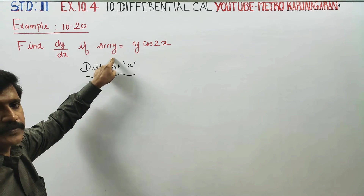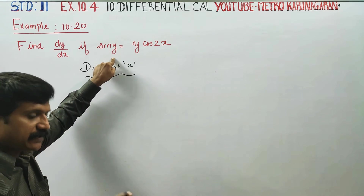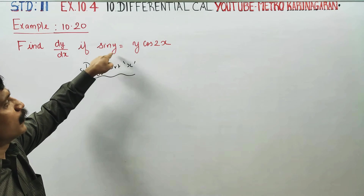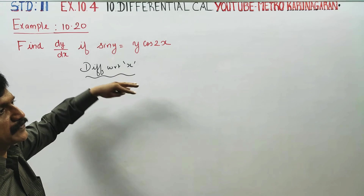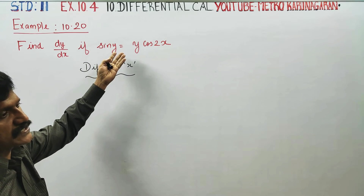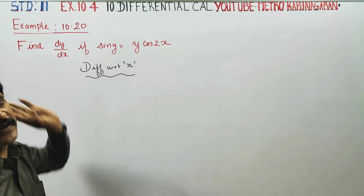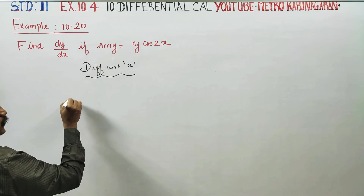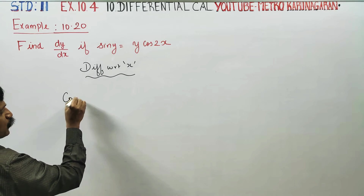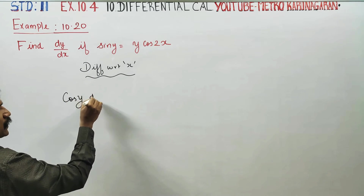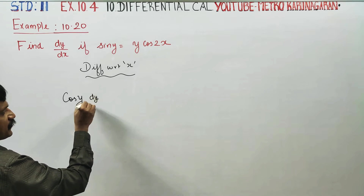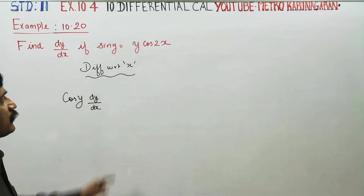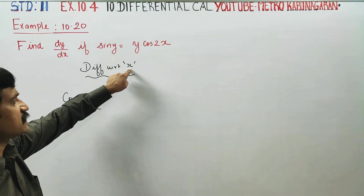y is the function of x. When you differentiate sin y, you will be getting cos y, and you will be getting the extra term dy by dx. We are only differentiating with respect to x.